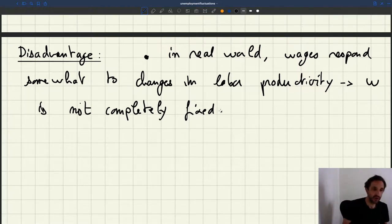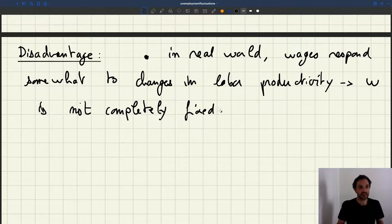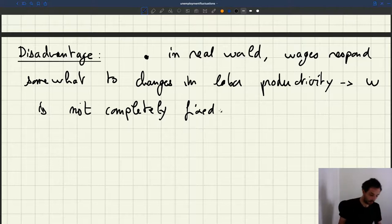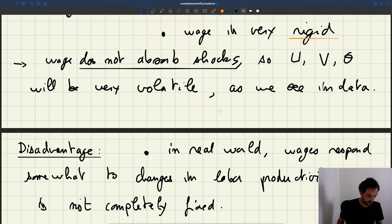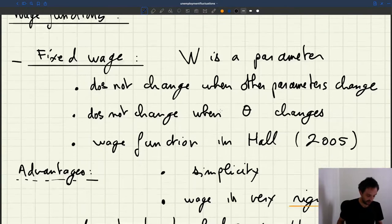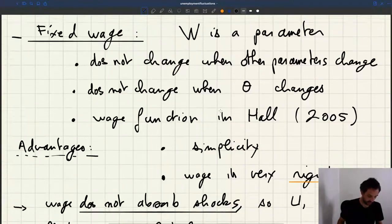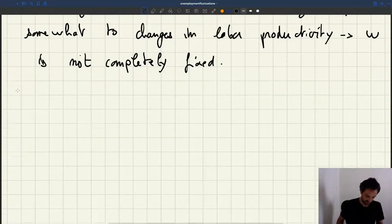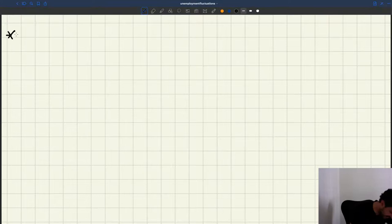So what we want to try to do now is to develop a wedge function that has some of the nice properties of the fixed wedge. So it's simple, it's going to be rigid, but it's not as stark as a fixed wedge. It just doesn't stay completely fixed all the time. And so we'll call that a rigid wedge instead of a fixed wedge. That's going to be another wedge function that we'll consider.